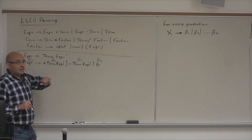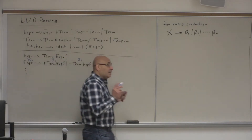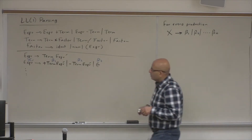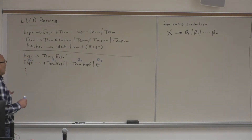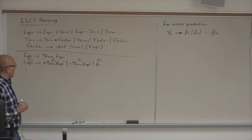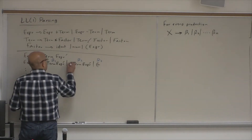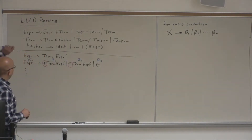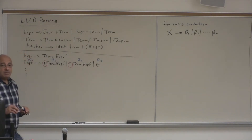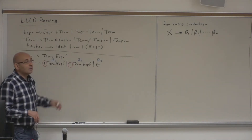The key idea in LL1 is that you always have one valid option — one valid alternative. You can't have more than one valid option. When we match beta 1, beta 2, beta 3 with what we have in the input, clearly beta 1 and beta 2 have different first symbols, so there's no problem. The symbol in the input will either be a plus or a minus — it cannot be both. So there is no intersection.